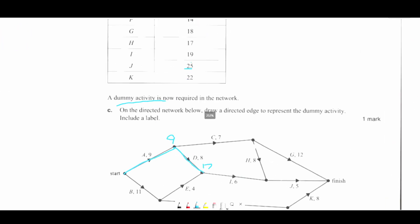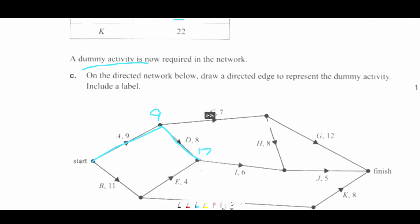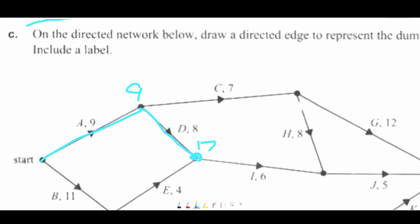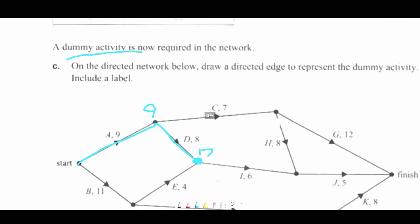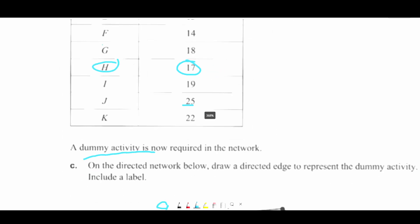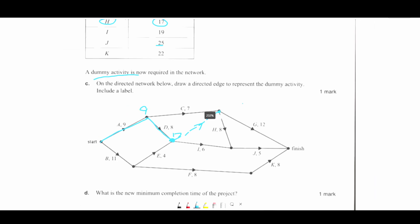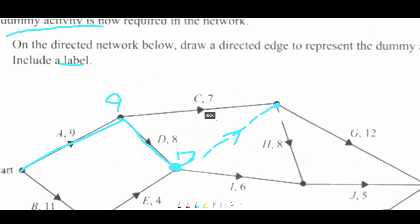So we would think that I would be next. And we would think that this would be 17. But this is now 19 for some reason, which means the dummy activity is going to start somewhere here. So where is 17 being happened? 17 is being happened at H. So where is H? H is here. Therefore, there should be a dummy activity going like this. Include a label. I'll call it dummy.